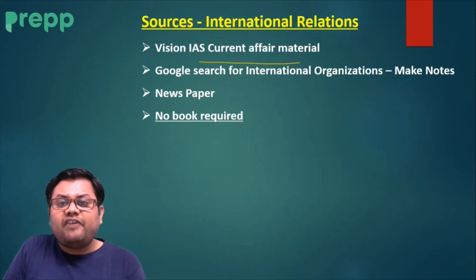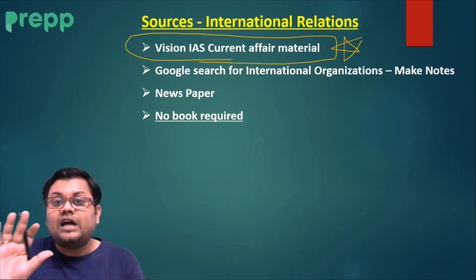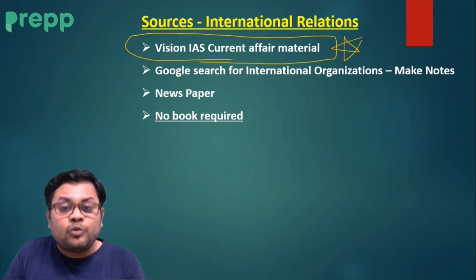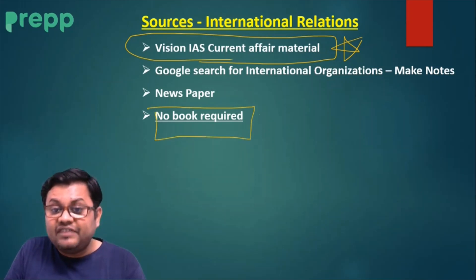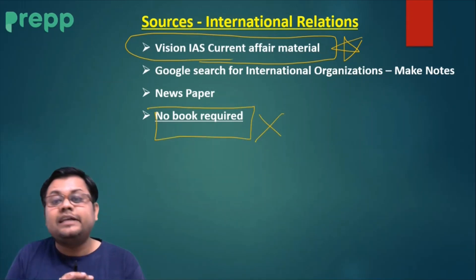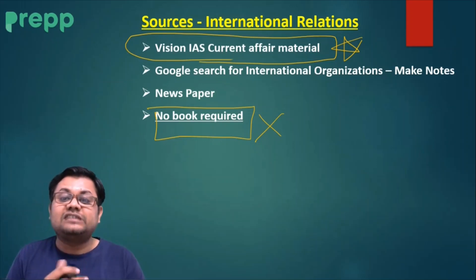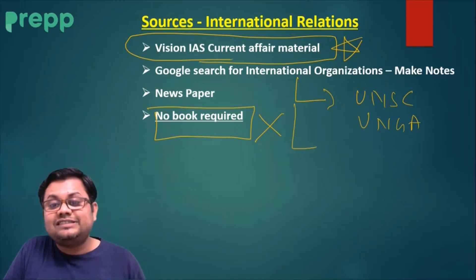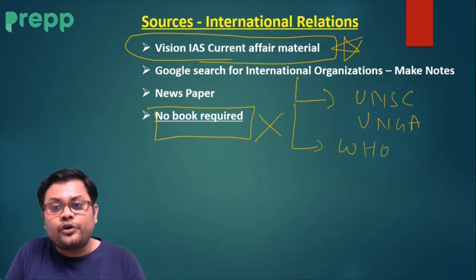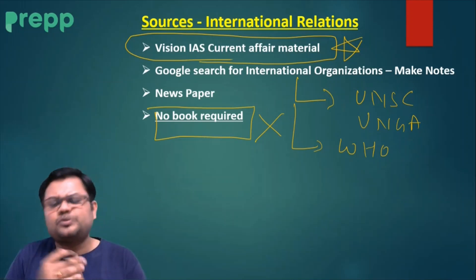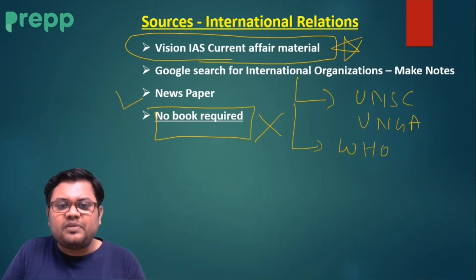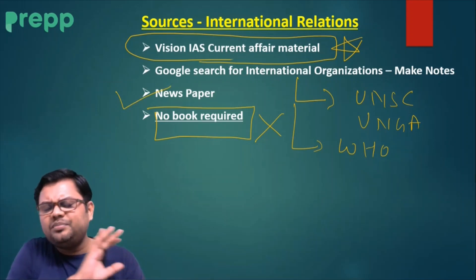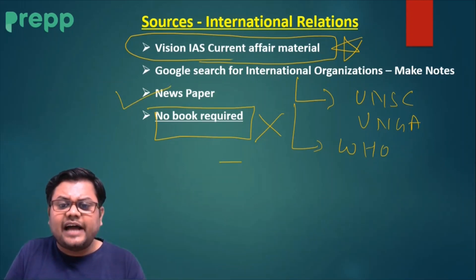For IR, the most important and only resource is current affairs material. You do not need to follow any book for this section. For international organizations — principal ones like UNSC, ECOSOC, UNGA, or specialized agencies like WHO and UNESCO — just Google them and make your own notes. Beyond current affairs from newspapers, no other source is needed for IR.